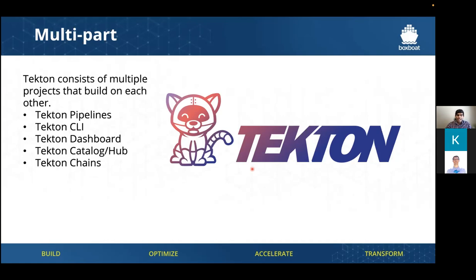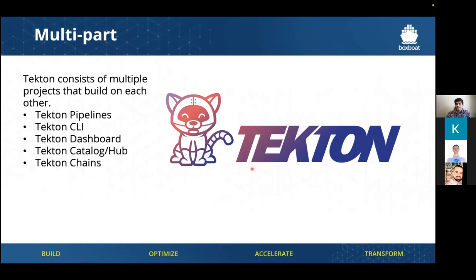The catalog, or the hub, is basically a collection of different tasks. It's a good starting point for anyone starting out with Tekton who doesn't know how to make tasks or build a specific pipeline. Our example is actually taken from the catalog, so it helps me explain it a bit more. And then finally, the important piece is Tekton Chains — this is the one doing the supply chain security, and the whole presentation is going to be based on that.